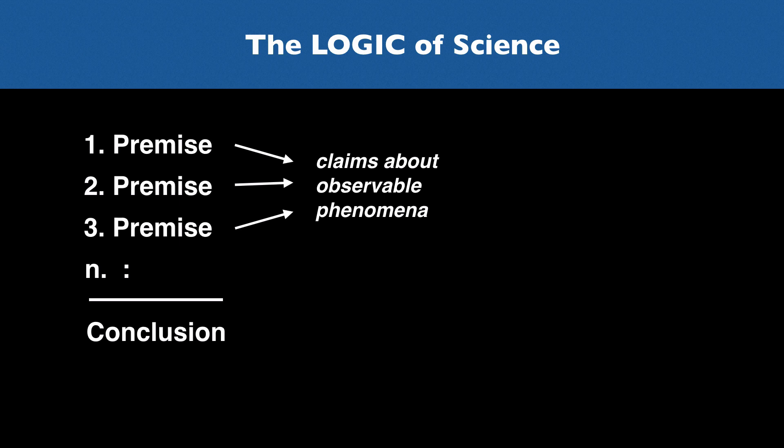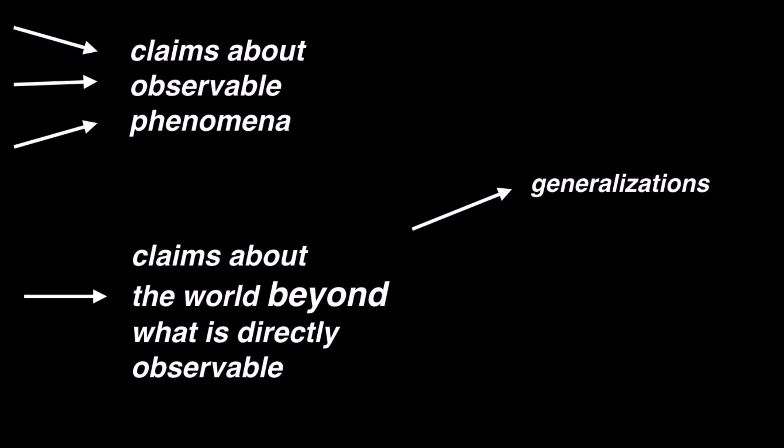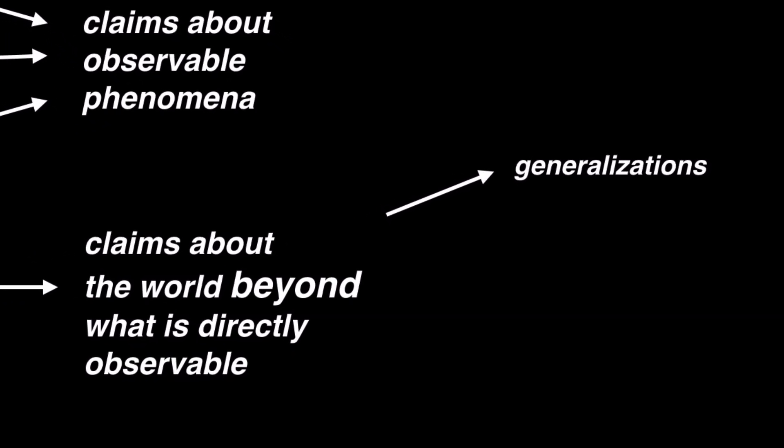The conclusion, ultimately, will make an assertion that goes beyond what is asserted in the premises, and will often go beyond what is empirically observable at all. These conclusions will have different forms, and they express different kinds of scientific knowledge claims. One kind is a generalization — a statement of the form 'all A is B': all bodies move in such and such a way, all chemical reactions work like this, all metals have the following properties, all plants have the following properties, and so on.